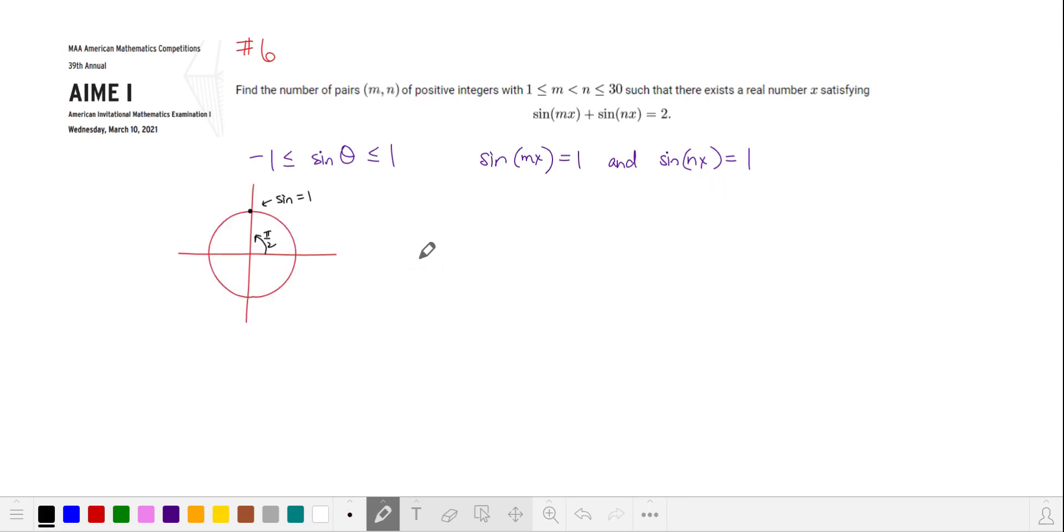According to our unit circle, sine is 1 when the angle is π/2 or some multiple of 2π plus π/2. We can write this as mx is π/2 plus 2 times a times π, where a is an integer, and nx is π/2 plus 2bπ. Let's take the ratio of mx to nx to cancel out the x, cancel the π's, and multiply the numerator and denominator by 2.